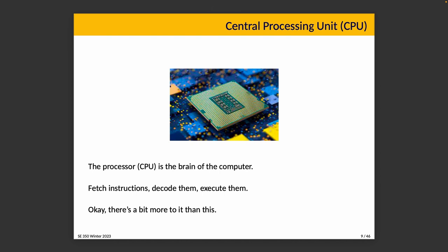The CPU — the central processing unit — is the brain of the computer. At a very simple level, you can think of fetch, decode, and execute as the basic steps taken. We fetch instructions first to find out what the next thing to do is; we decode to figure out what we are supposed to do, recognizing whether this is an add, subtract, multiply, load, or store instruction; and then actually carrying out the instruction takes time. This fetch-decode-execute cycle continues until the program finishes — or runs indefinitely.